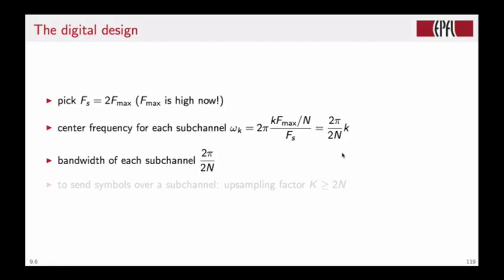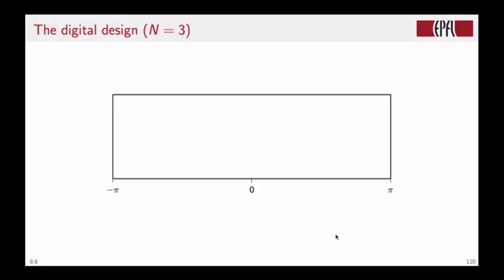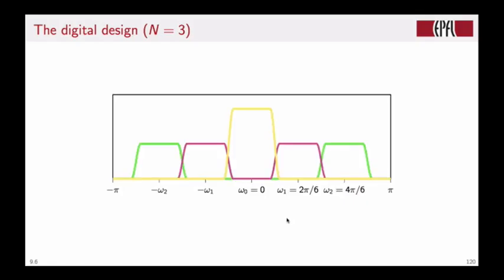The bandwidth of each sub-channel is also 2 pi over 2N. And so if we want to send symbols over any of these sub-channels, remember the modulation scheme that we've seen in the previous modules, then we will have to use an up-sampling factor K that is at least 2N. If we plot the result in the digital domain, let's suppose that we just want to have three sub-channels. We have something that looks like this: the center frequencies will be multiples of 2 pi over 6, so we'll have 0, 2 pi over 6, and 4 pi over 6. We will center channels over these frequencies, and the bandwidth of each channel will be 2 pi over 6. So the first channel is the baseband channel, and then we have two passband channels with, of course, their negative frequency counterparts.